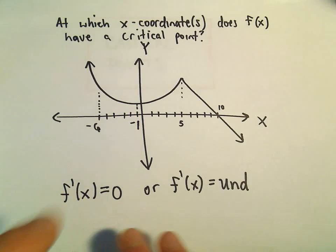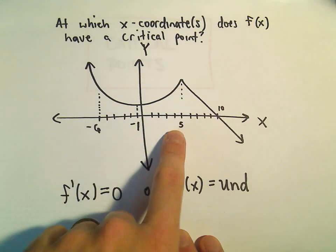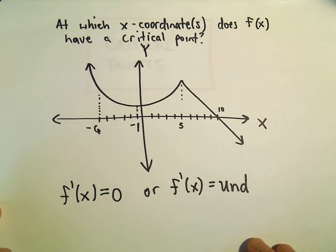And what I'm going to look at now, so we have kind of a few different x-coordinates - negative six, negative one, positive five, I've got ten listed here. We want to know at which of those x-coordinates do we have a critical point.